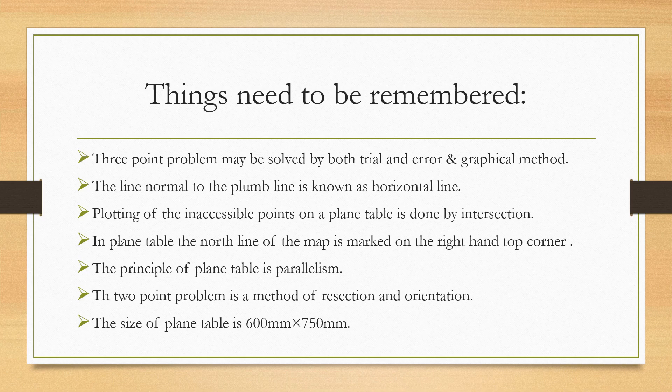Here are the things need to be remembered in plane table surveying: Three-point problem may be solved by both trial and error and graphical methods. The line normal to the plumb line is known as the horizontal line. Plotting of the inaccessible points on the plane table is done by intersection. In plane table survey, the north line of the map is marked on the right hand top corner. The principle of the plane table is parallelism. The two-point problem is the method of resection and orientation. The size of the plane table is 600mm by 750mm.